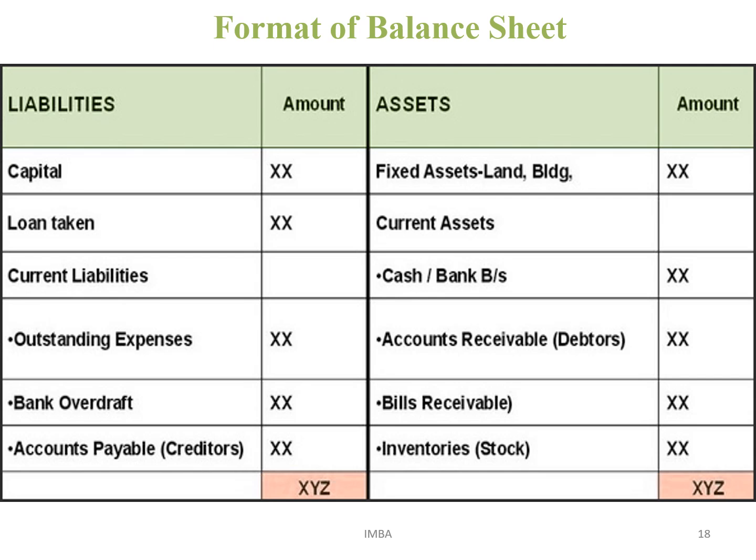In this way, while preparing final accounts we consider three kinds of statements: first, the trading account in which we calculate gross profit or gross loss; second, the profit and loss account in which we calculate net profit or net loss; and third, the balance sheet. All three statements together convey the income and financial position of a business, and preparing them is mandatory for the final account. Thank you.